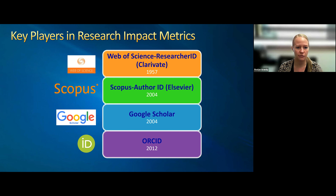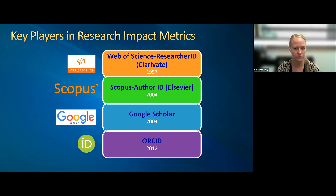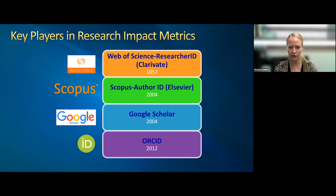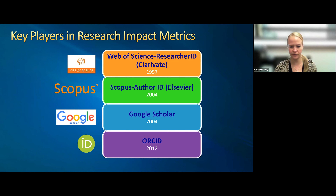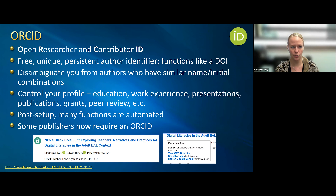There are a few key players in the research metrics arena. Clarivate is kind of the old-school, first one on the scene — their product is called Web of Science, also called Researcher ID. Scopus came out next and is a comparable product from Elsevier, one of the largest scientific publishers, and they use Author ID. Google Scholar also serves as a citation index. And then ORCID is the last key player.